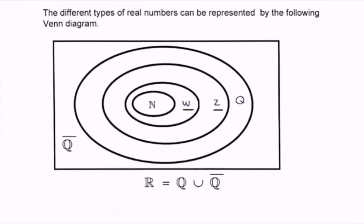The different types of real numbers can be represented by the following Venn diagram. First we have the natural numbers — the counting numbers 1, 2, 3, and so on. If we add on the value of 0, it becomes the whole number, so the natural number is a subset of the whole number. Adding the negative integers gives us Z, the integers. Then adding fractions or decimal places gives us Q, the rational numbers. Other than the rational, it is called the irrational, denoted Q-bar. Combining the rational and the irrational forms the real number. Thanks for watching — we'll see you next time.